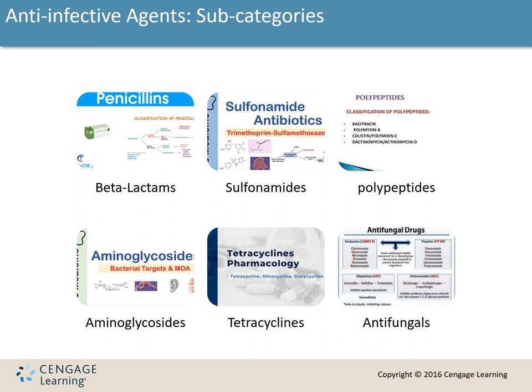Tetracyclines are derived from actinobacteria, part of the streptomyces family. They work by disrupting protein synthesis of the cell, making it impossible for bacteria to reproduce. They are effective against quite a few gram-negative and gram-positive bacteria. They can be prescribed topically, orally, or parenterally. Examples include tetracycline, minocycline, and doxycycline.